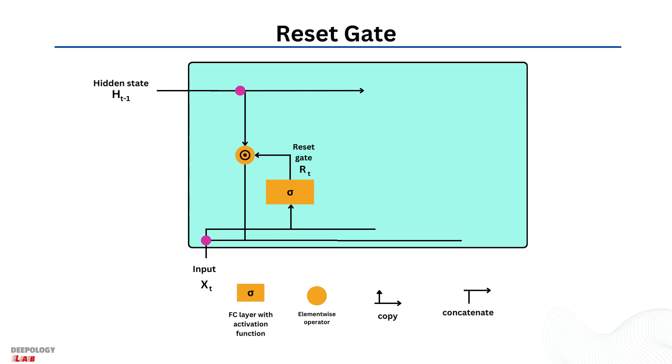A reset gate identifies the unnecessary information and decides what information to be laid off from the GRU network. Simply put, it decides what information to delete at the specific time step. The input to the reset gate is the hidden layer at the previous time step and the current input, both have their weights associated with them which are learned during the training process. Finally, results are added together and a sigmoid activation function is applied to squash the result between 0 and 1.